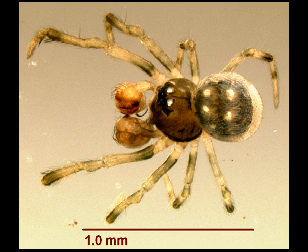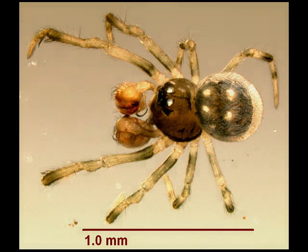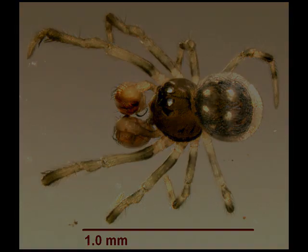Microdipoena sultansis, Simon, 1895, Sri Lanka. Microdipoena samansis, Marples, 1955, Samoa and Hawaii. Microdipoena vanstale, Baiert, 1985, Cameroon. Microdipoena yini, Lin and Lee, 2013, China.